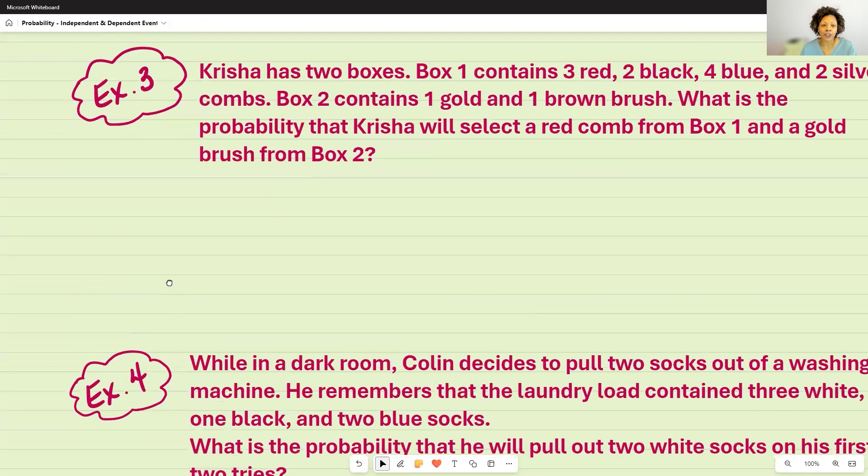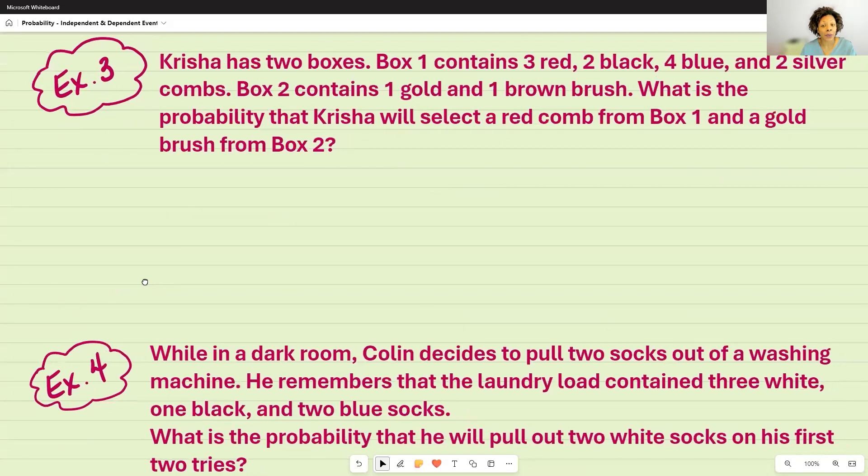For example three, Krisha has two boxes. Box one contains three red, two black, four blue, and two silver combs. Box two contains one gold and one brown brush. What is the probability that Krisha will select a red comb from box one and a gold brush from box two?